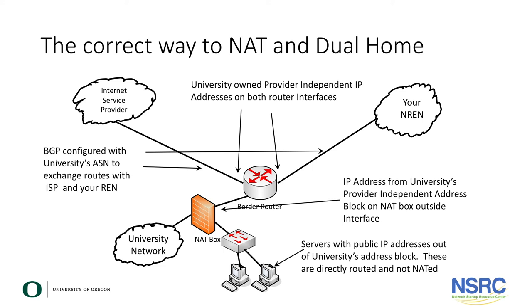Finally, this diagram shows the proper way to dual home in a NAT environment. The university has their own provider independent address space and has allocated addresses out of that space for each of the interfaces connected to the NREN and the ISP. They have configured BGP peering with both the NREN and the ISP. Note that we use the university's provider independent address space for the IP addresses on the outside of the NAT box, and we can also have servers with public IPs out of this same provider independent address block.